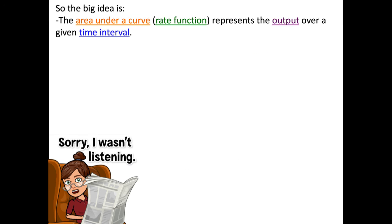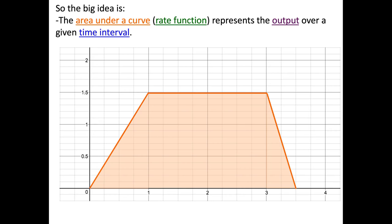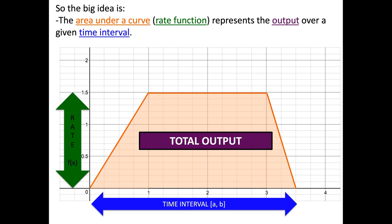So here's the big idea that I want you to take away from this. We are so used to calculating rates at time, moments in time, but we can actually use those rate functions in a different way. We can use the area under the curve of a rate function, and it'll give us the output over a time interval. So whatever that rate function is, the area under it with respect to the x-axis, that's important to note, over your time interval, will give you the total output, the total accumulation of something.